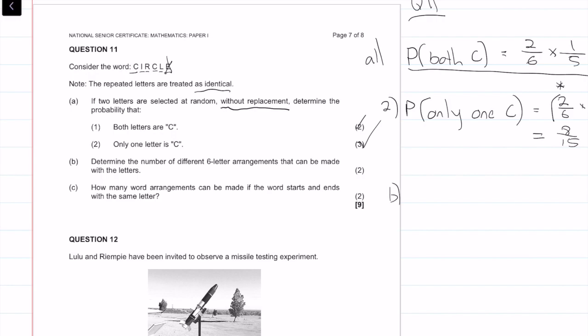If we look at question B, it says, determine the number of six letter arrangements that can be made with the letters. So we have, if we have six options, for the first one we have six chances, then five, then four, and so on. So we have six factorial chances, or six factorial options. But remember there's two C's that are repeated, and we treat them as identical. So we have to divide this by two factorial, because there are two C's.